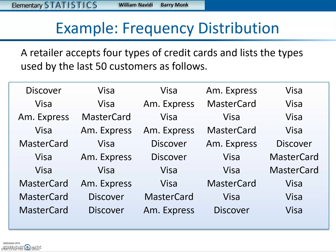As an example, a retailer accepts four types of credit cards and lists the types used by the last 50 customers as follows. So 50 people went in and they used these different types of credit cards.